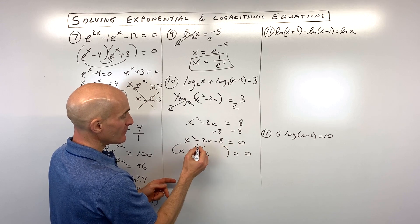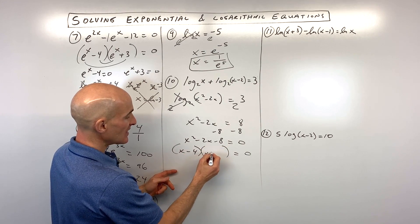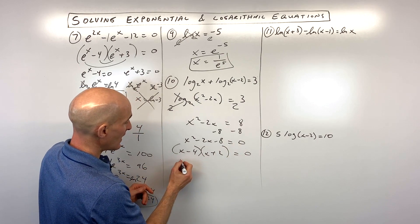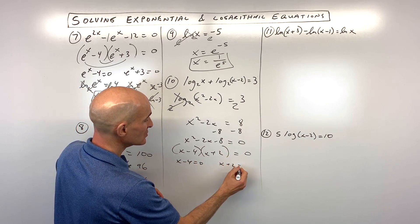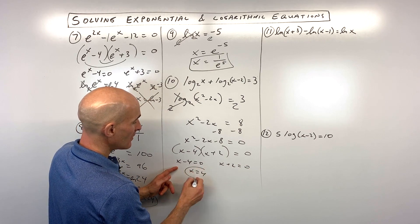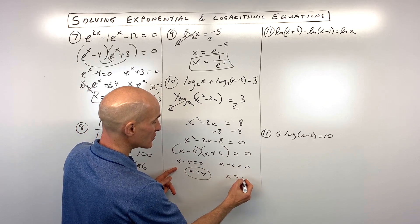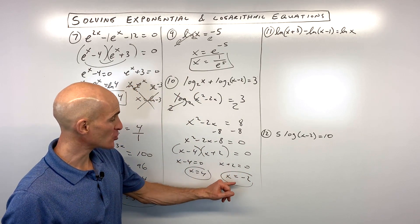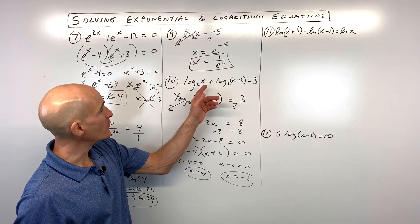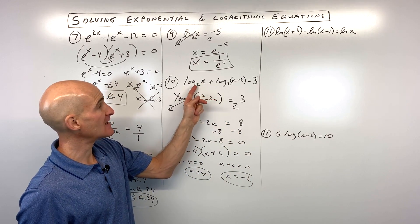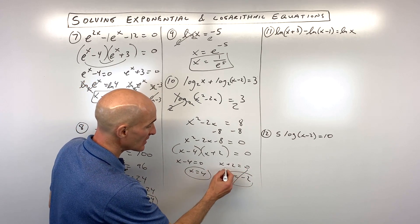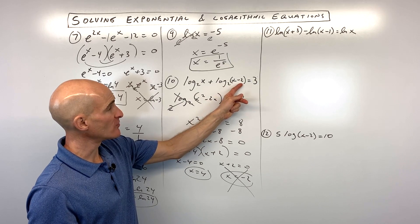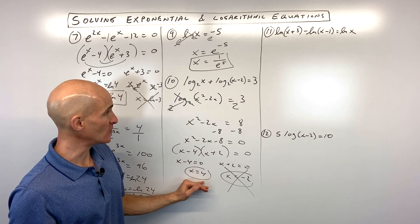Subtract 8 from both sides: x squared minus 2x minus 8 equals 0. Factor: what multiplies to negative 8 but adds to negative 2? That's negative 4 and positive 2. Set each factor to 0: x minus 4 equals 0 and x plus 2 equals 0, giving x equals 4 or x equals negative 2. Putting negative 2 back in, we'd be taking the log of a negative — extraneous. Putting 4 back in gives positive values, so x equals 4.